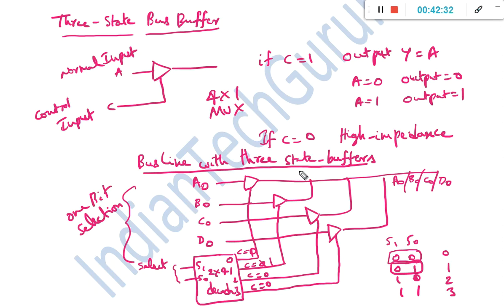Like this, we implement a common bus. We have now seen how to implement a common bus using multiplexers as well as using three-state bus buffers. Once we successfully establish a bus structure, we use it to perform data transmissions — specifically, to transmit content between registers.